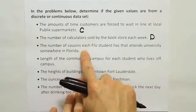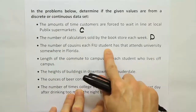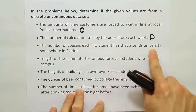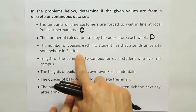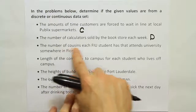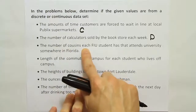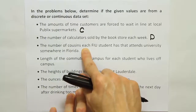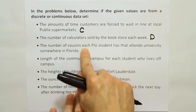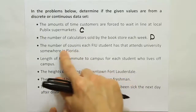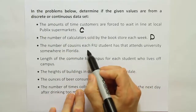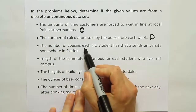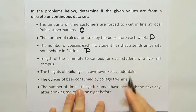The number of cousins each FIU student has that attends university somewhere in Florida. The number of cousins you have would certainly be a count — you wouldn't measure how many cousins you have. You don't put them on a scale or something. You'd count how many cousins you have, so I'm going to say that's discrete data.